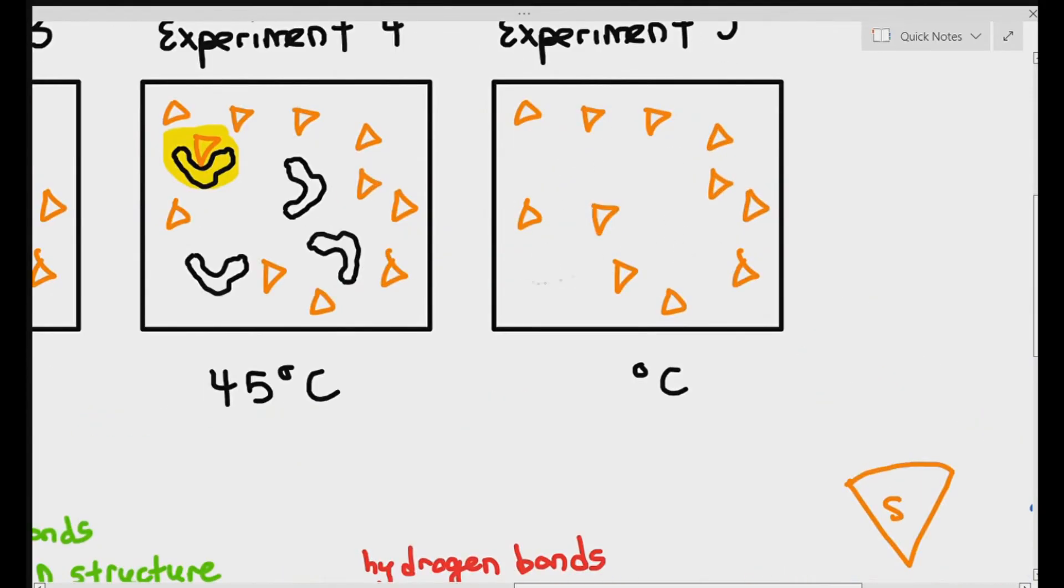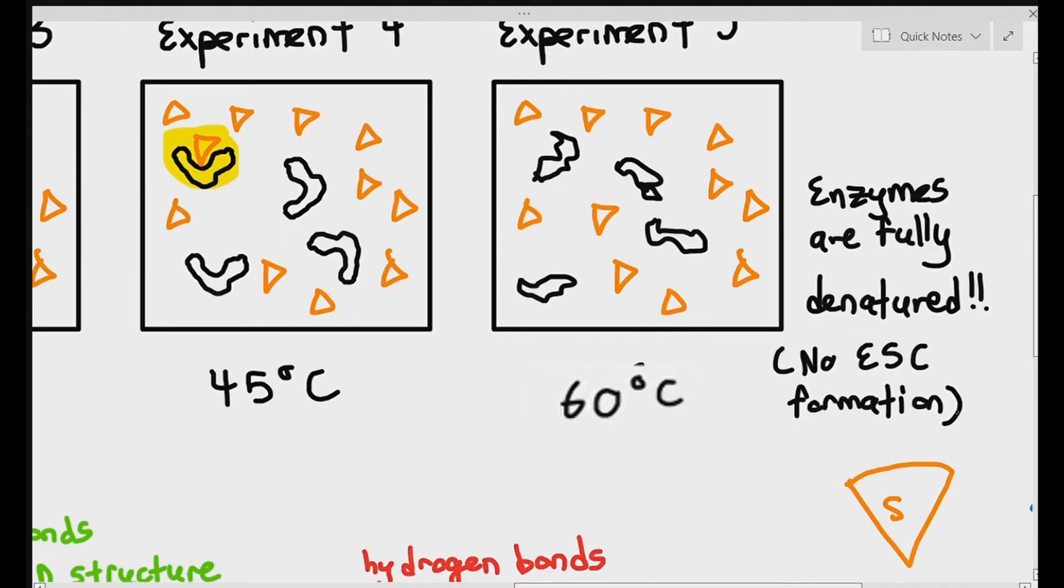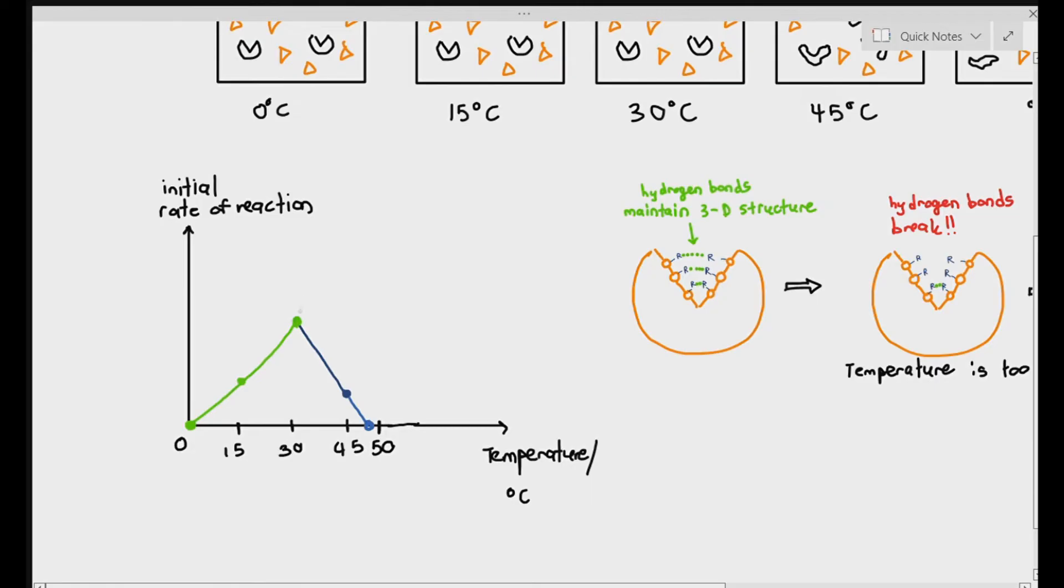For experiment number five, at 60 degrees Celsius, what will happen is the enzymes are fully denatured. Because the enzymes are fully denatured, because it has actually broken up most of the hydrogen bonds, there are no reactions taking place at all. So at about slightly above 45 degrees Celsius to about 48 degrees Celsius, the initial rate of reaction is zero.